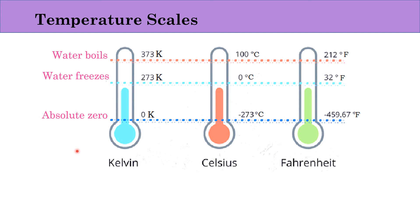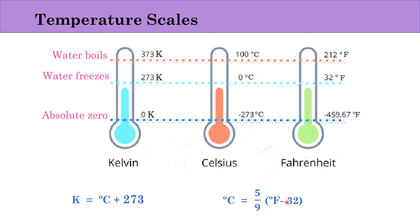To convert degree Celsius to Kelvin, the relation is: Kelvin = degree Celsius + 273. To convert Kelvin to degree Celsius: degree Celsius = Kelvin − 273. To convert degree Fahrenheit to degree Celsius: degree Celsius = (5/9) × (degree Fahrenheit − 32). To convert degree Celsius to degree Fahrenheit: degree Fahrenheit = (degree Celsius + 32) × (9/5). This is how we measure and convert temperatures between scales.